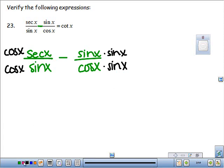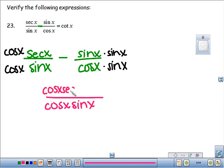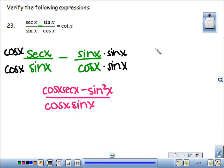So that means that I have a common denominator of cosine sine. So cosine of x, sine of x, and in the numerator, I have cosine times secant minus sine times sine squared of x. So far we have gotten a common denominator, and combine our fractions.